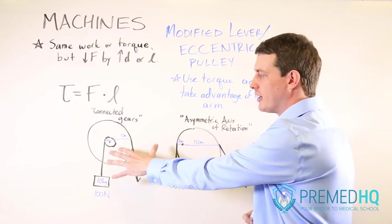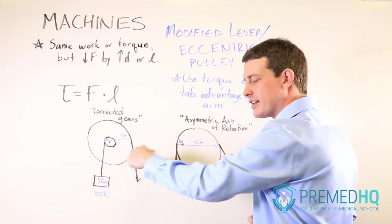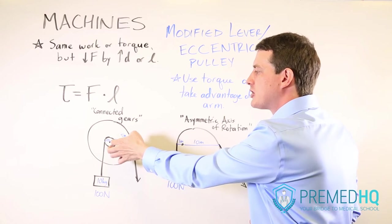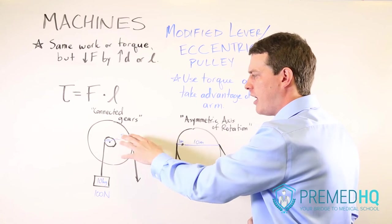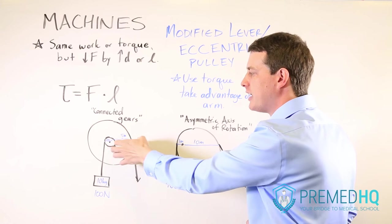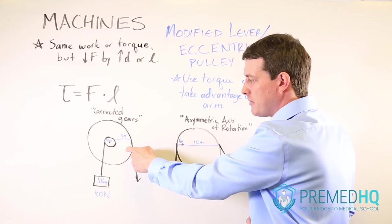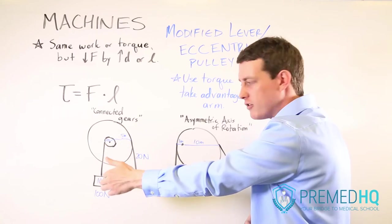So in this one over here, we have two gears that are connected, and so they'll be rotating at the same time. But one of them has a much larger axis of rotation, a larger lever arm. And so you have five meters of lever arm here versus only one meter of lever arm over there.